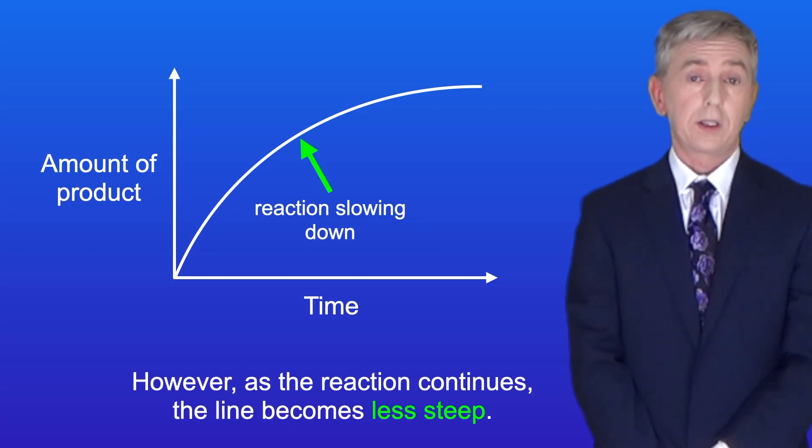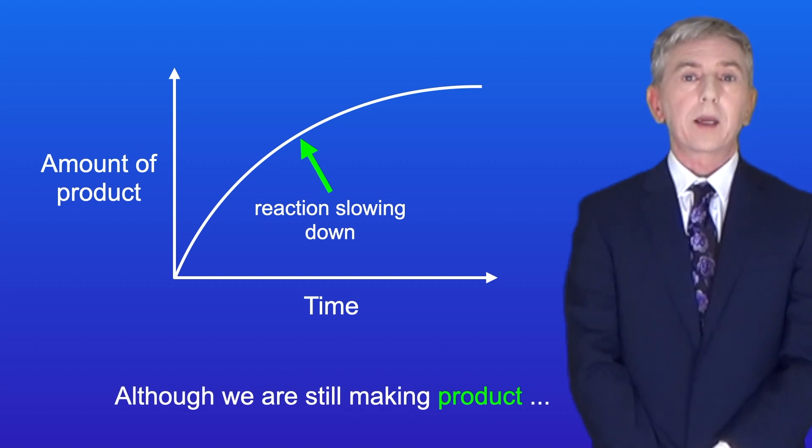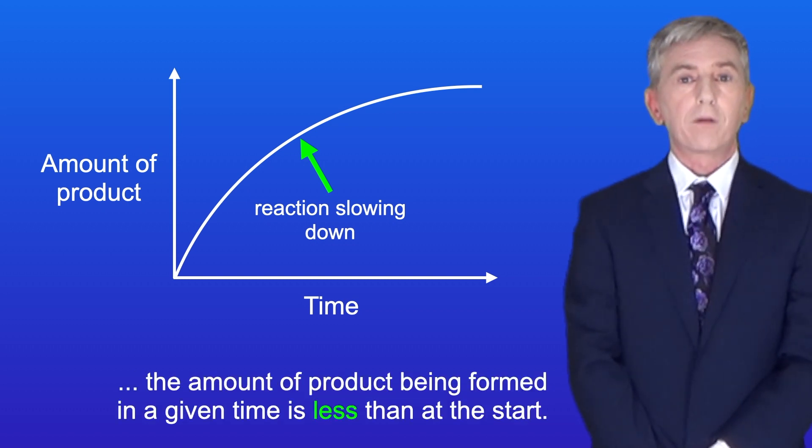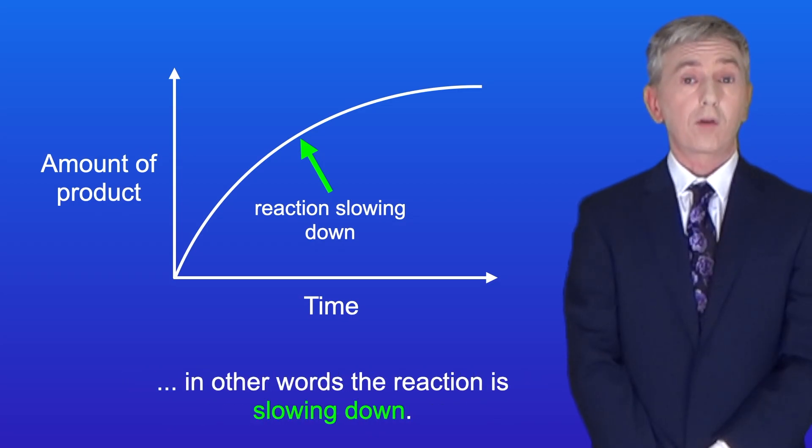However as the reaction continues the line becomes less steep. Although we're still making product, the amount of product being formed in a given time is less than at the start. This tells us that at this point the rate of the reaction has decreased. In other words the reaction is slowing down.